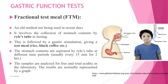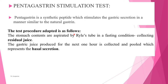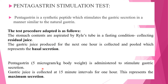The samples are analyzed for free and total acidity, and results are normally represented in a graph. The Pentagastrin Stimulation Test uses pentagastrin, a synthetic peptide that stimulates gastric secretion similarly to natural gastrin. Stomach contents are aspirated via Ryle's tube in fasting conditions to collect residual juice. The gastric juice produced over the next one hour is collected and pooled, representing basal secretion. Pentagastrin is then administered at 5 micrograms per kg body weight, and gastric juice is collected at 15-minute intervals for one hour, representing maximum secretion.